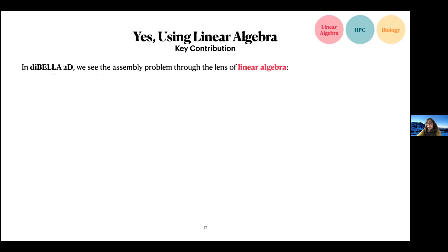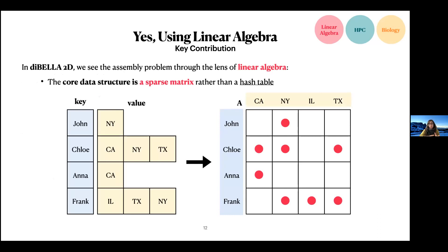In our previous attempt, called BELLA 1D, we implemented the alignment part of de novo assembly as a graph algorithm using a distributed hash table. The question we answer in this work — BELLA 2D — is: can we do better? And the answer is yes, using linear algebra. BELLA 2D sees the assembly problem through the lens of linear algebra. We move the core data structure from a distributed hash table to a sparse matrix, as illustrated by mapping a person-to-states relationship from a hash table to a sparse matrix.